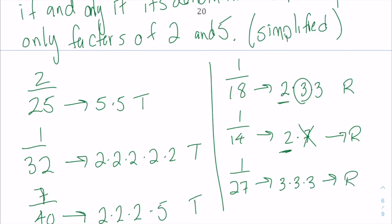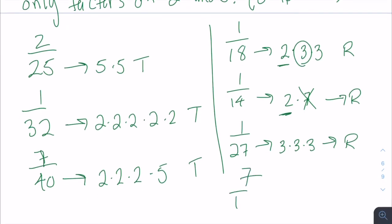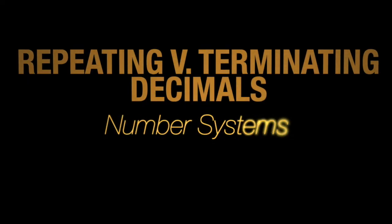So if there's any factor other than two or five in the denominator when simplified, it's going to repeat. That takes out of the equation something like seven over fourteen — you might think the denominator has factors other than two or five, but we can simplify it. Seven over fourteen is one over two, and now the denominator's only factor is two, so that terminates. That's how to quickly tell if a fraction will turn into a terminating or repeating decimal.